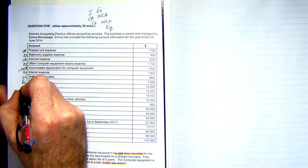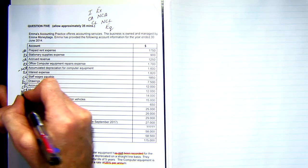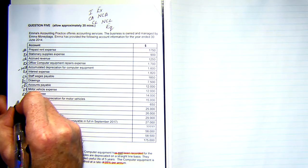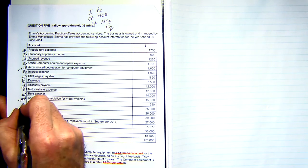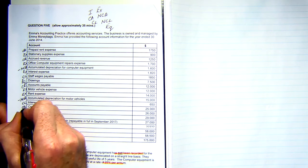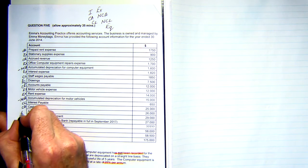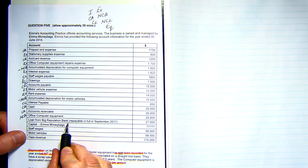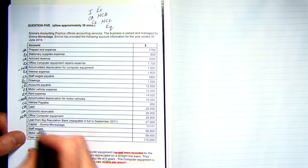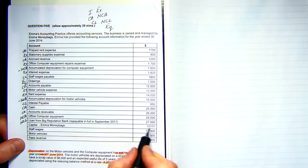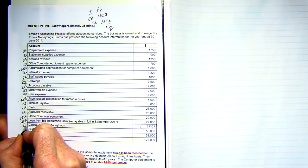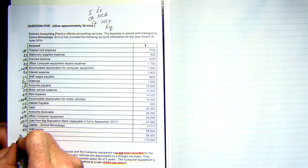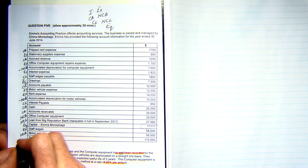Accounts payable — current liability. Motor vehicle expense — rent expense, easy. Accumulated depreciation for motor vehicles — minus non-current asset. Interest payable — current liability. Cash — current asset. Accounts receivable — current asset. Office computer equipment — non-current asset. Loan from the Big Reputation Bank, repayable in full in September 2017 — non-current liability. Capital, which we don't know the figure for — equity. Staff wages — expense. Motor vehicles — non-current asset. And fees revenue — income.